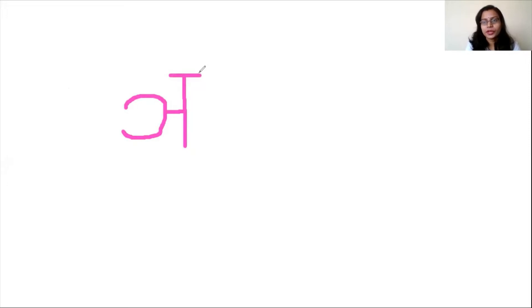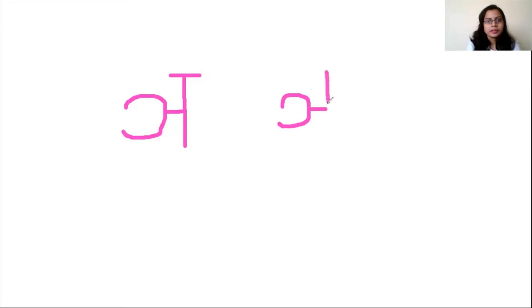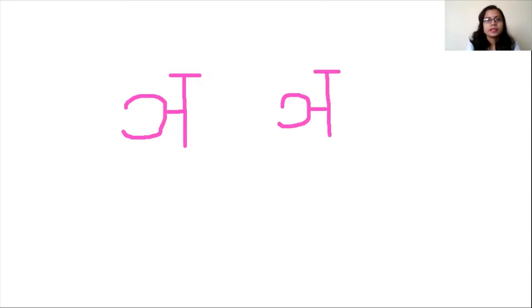Then you draw a standing line, and on the top remember to cover the Hindi letter. This is your letter ña. Let me write more neatly: write the opposite C, then from here put a small sleeping line, add a standing line, and then cover it on top. This is your letter ña.